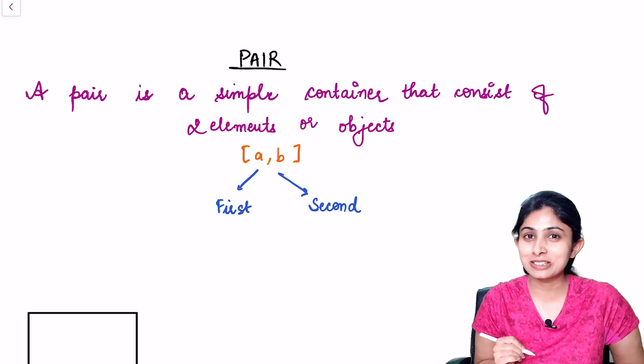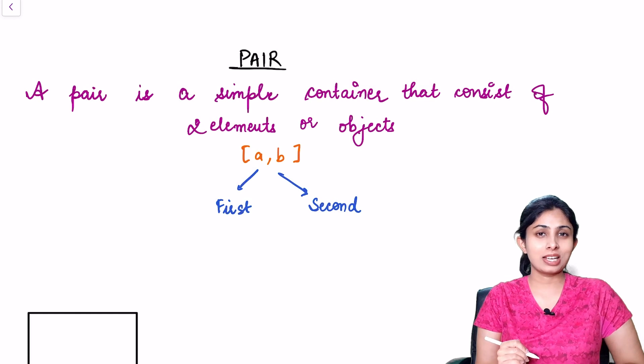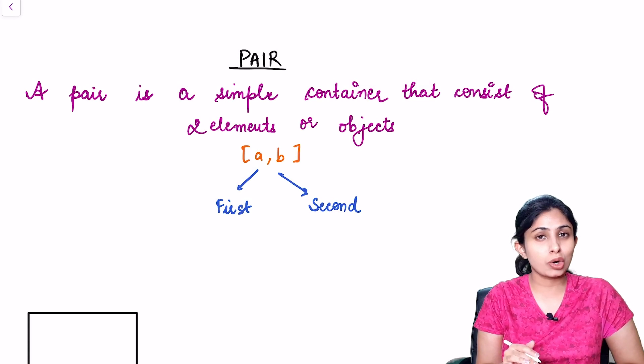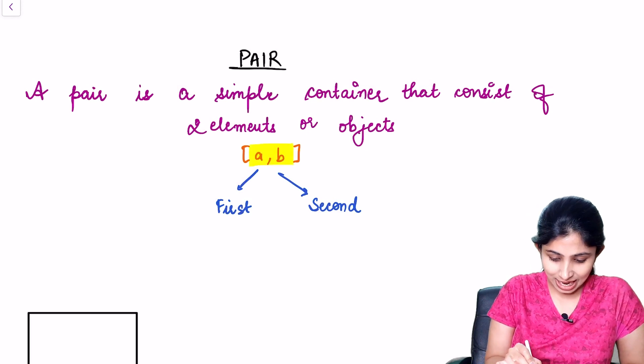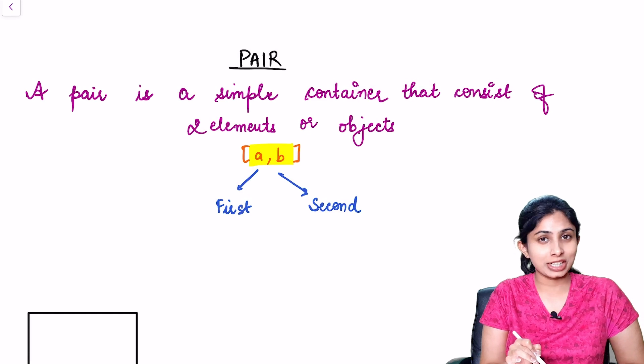Hello everyone, in this video we'll be learning about another very useful STL container called pair. Pair is a very simple container. It consists of two elements or two objects say a and b. These two elements can be of same or different data type.